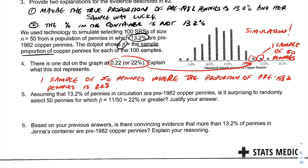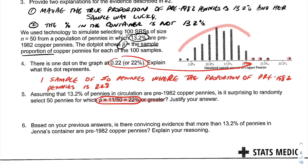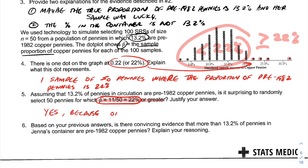Assuming that 13.2% of pennies in circulation are pre-1982 copper pennies, is it surprising to randomly select 50 pennies for which p-hat equals 22% or greater? Looking at the graph, we go to the 22% line — only four dots are at or above 22%. Everything else is less than 22%. This means only four out of one hundred, or 4% of samples, were 22% or greater. Yes, it is surprising.